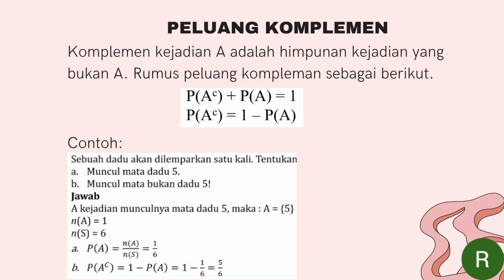Contoh soal: sebuah dadu akan dilempar satu kali. Tentukan peluang muncul mata dadu lima dan muncul mata dadu bukan lima. Penyelesaiannya: A adalah kejadian munculnya mata dadu lima, maka A sama dengan {5}. N(A) sama dengan satu. Karena diketahui di dalam soal adalah sebuah dadu yang dilemparkan dalam satu kali. Selanjutnya N(S) bernilai enam, karena di dalam satu dadu mempunyai enam sisi angka. Muncul mata dadu lima: P(A) sama dengan N(A) per N(S), yaitu 1 per 6.